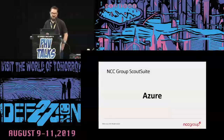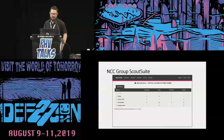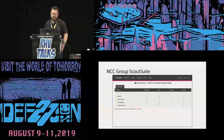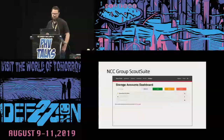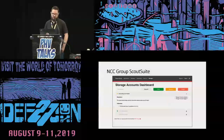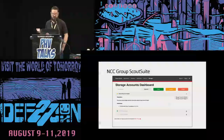Running Scout Suite against Azure shows a familiar web page, but with fewer services because Azure's API is not as mature as AWS — though they are adding features. We have five services: key vault, network, security center, SQL database, and storage accounts. In the storage accounts dashboard, we see a finding for 'access keys not rotated.' Clicking the plus sign reveals details: the keys were rotated more than 90 days ago, and there's also a reference to the CIS benchmarks.